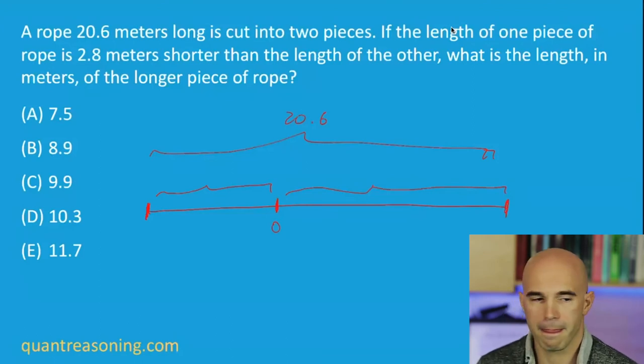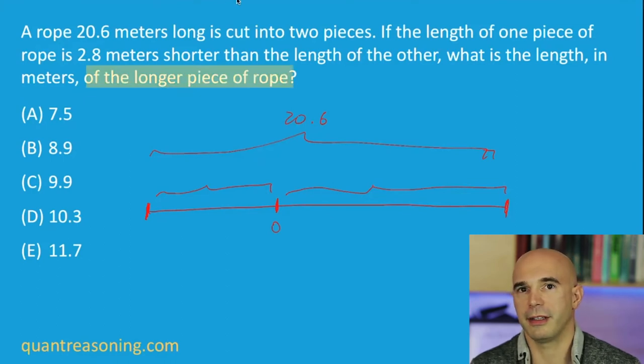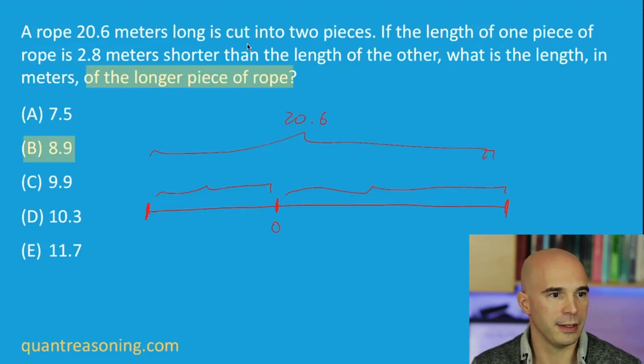So the 2.8 comes out of the 0 to the right. And what do you want to bet that they'll have an answer choice for the shorter one? What happens if we subtract 2.8 from this? We get 8.9. Yeah, so they did provide an answer choice for the people who read the question too quickly and answered the wrong thing. And of course, they also offered us the other trap answer choice for those who just take half of 20.6.